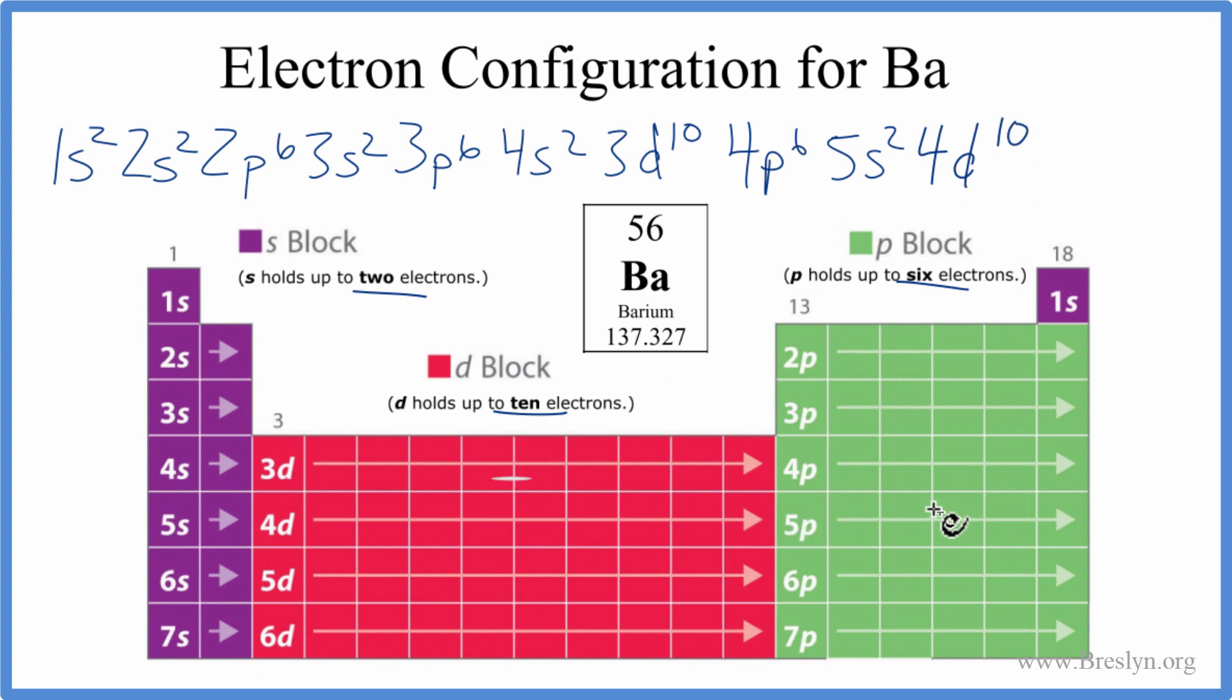5p, we can put all 6 in there. That gives us a total of 54, so we only need 2 more. After 5p, we go to the 6s, so we'll put 2 in there, 6s2.